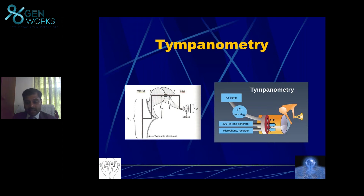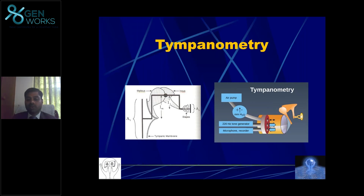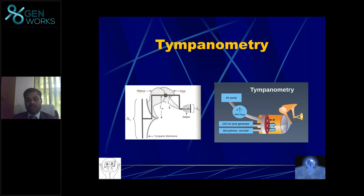When the outer hair cell changes its size and shape, the basilar membrane also moves. This causes a reverse transmission of sound — instead of sound going into the ear, sound is emitted from the inner ear to the external ear. If you record this using a microphone in the ear canal, you can determine whether the outer hair cell is functioning, because only a functioning outer hair cell produces these emissions.